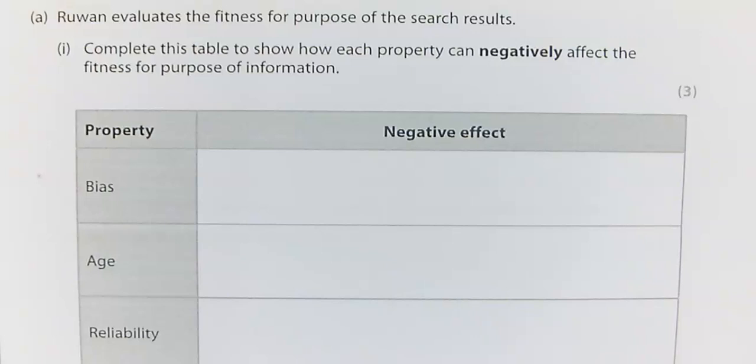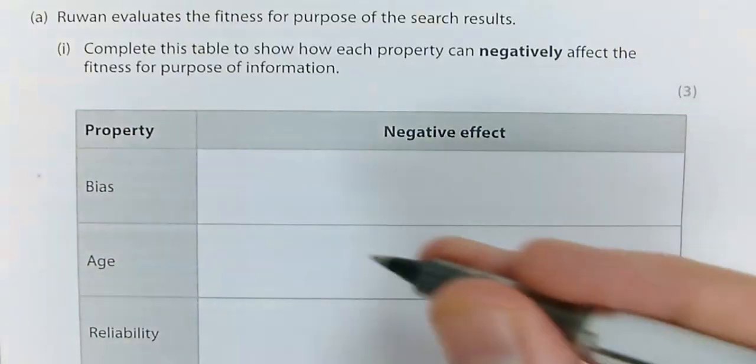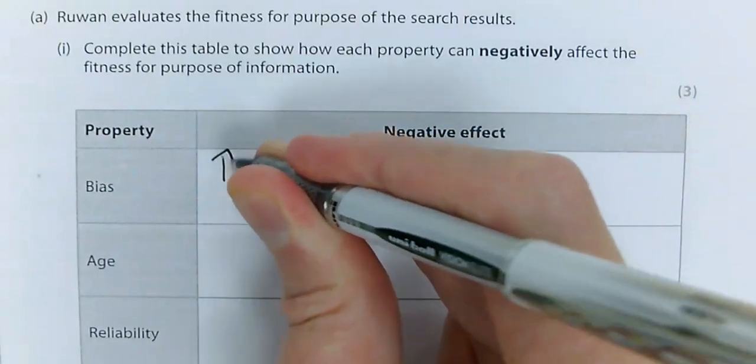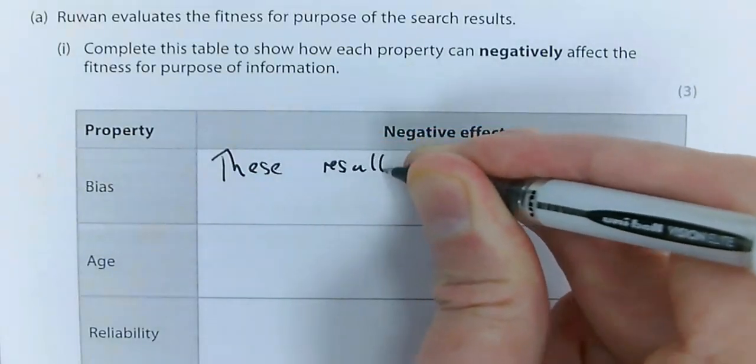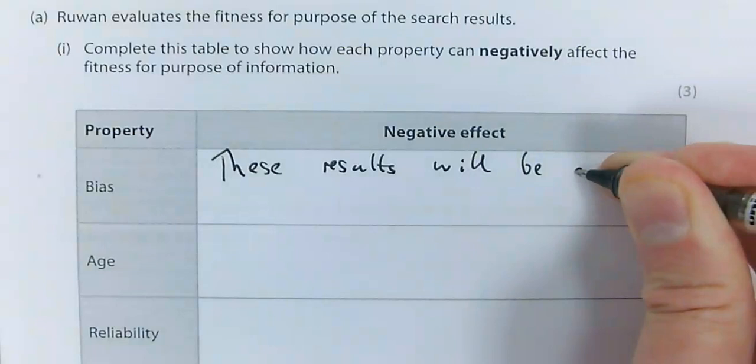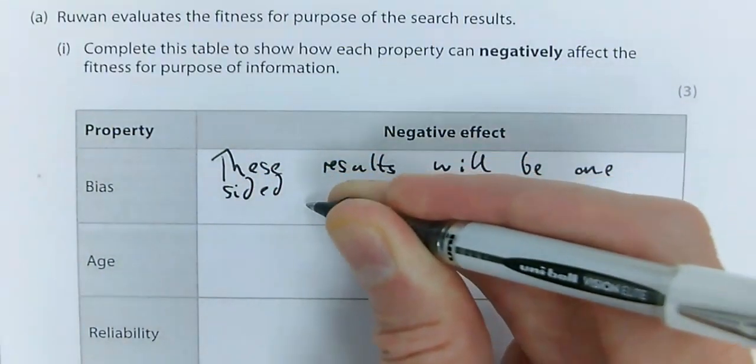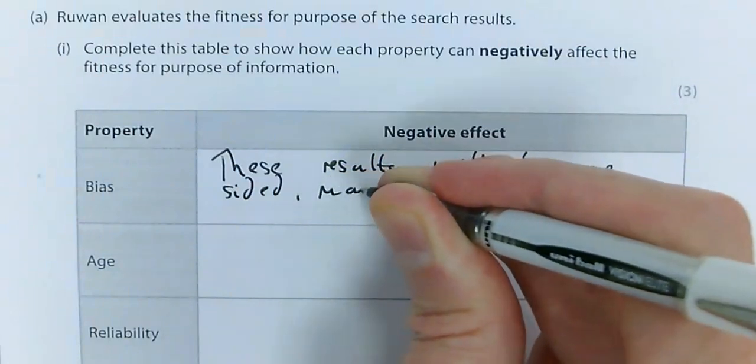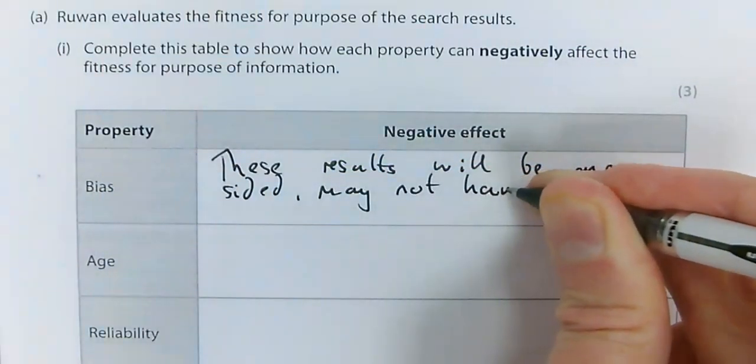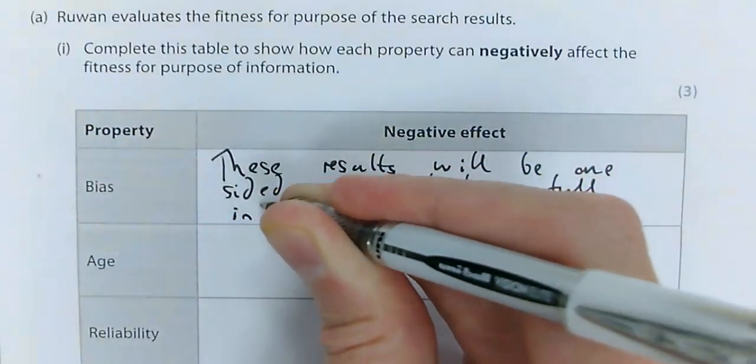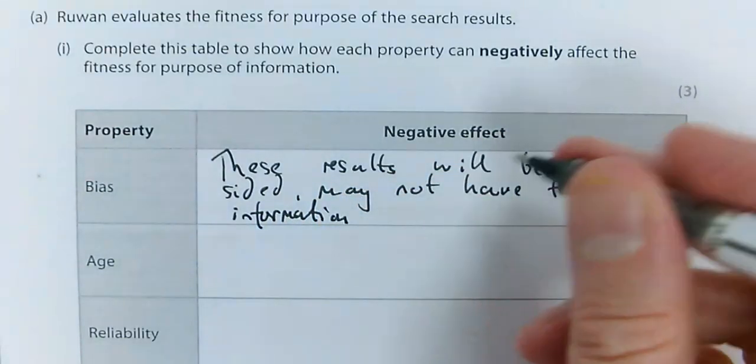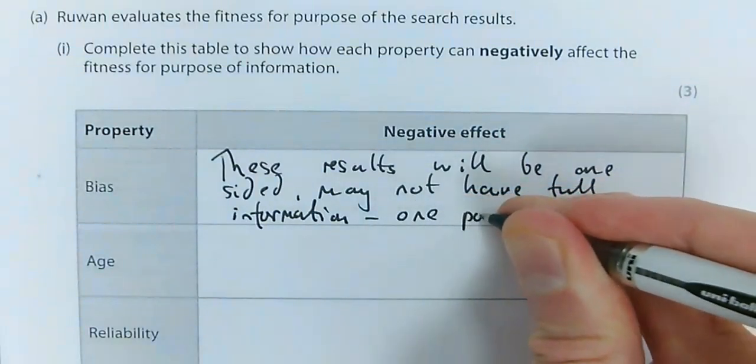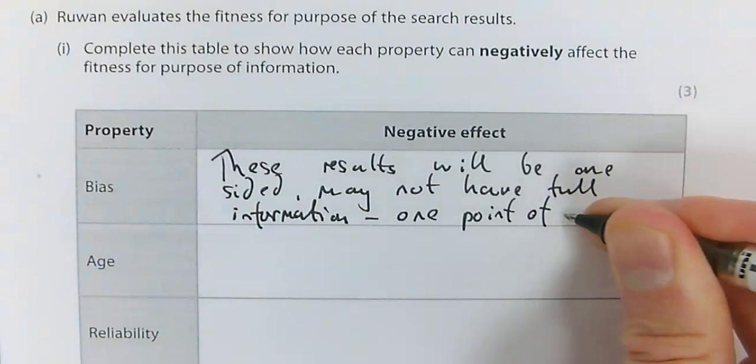Bias means one-sided, so these results will be one-sided. May not have full information. You wouldn't really need to write this much, but I'm just making a point here. Just one point of view, one mark.